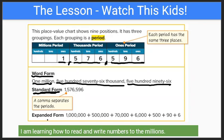And then there's expanded form, where you break the digits apart into each digit. This is one million, so we write one million. This is five hundred thousand. This right here is seven ten-thousands, or seventy thousand. This is six one-thousands, so that's six thousand. This is five hundred, so they write five hundred. This is ninety, so they write ninety. And this is six, so they write six.